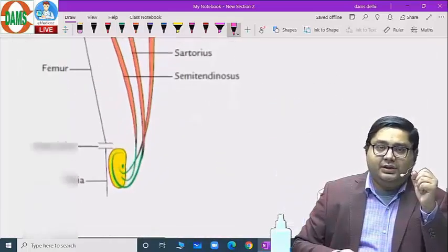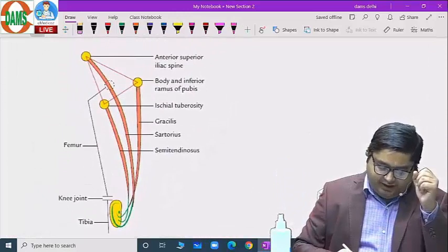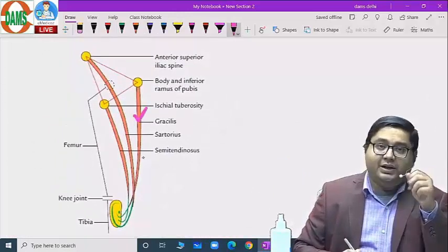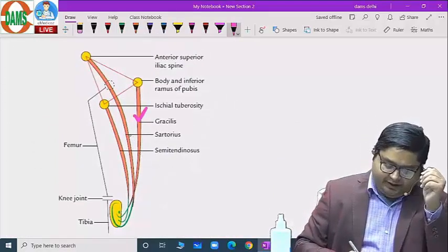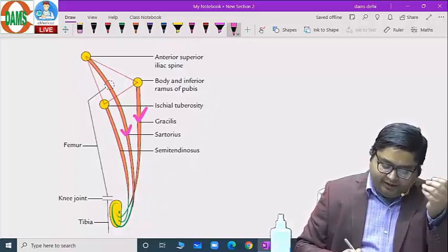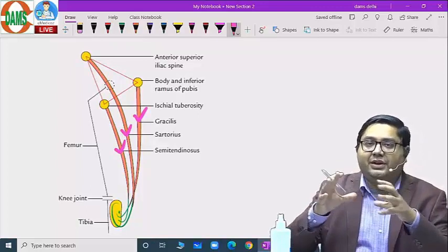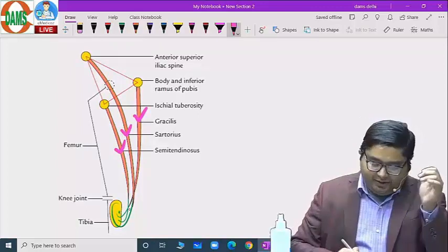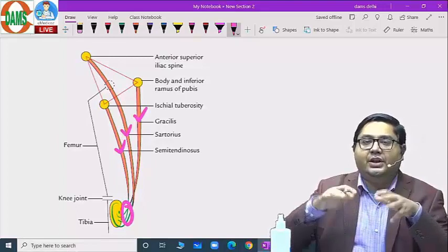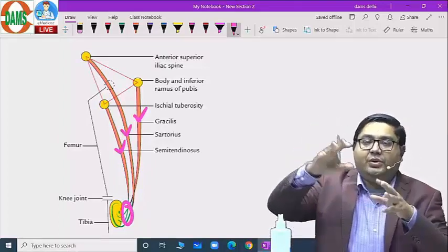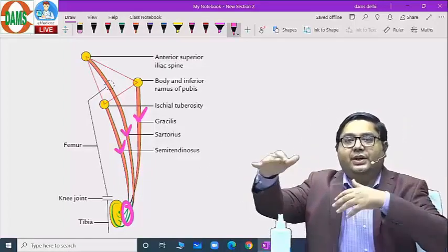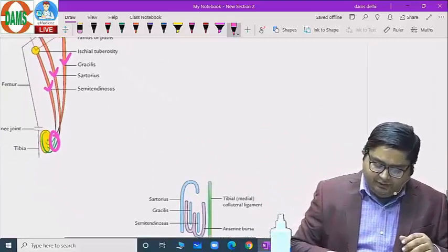This is the pes anserinus. We have these muscles: gracilis coming from the medial compartment, sartorius coming from the anterior compartment, semitendinosus coming from the posterior compartment. These are coming from different compartments but their insertion is common, just like tent ropes. We have one point of attachment common and the other point of attachment of the ropes different.